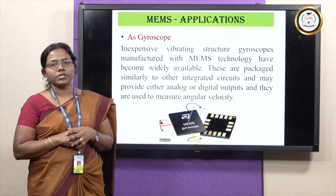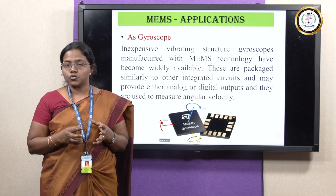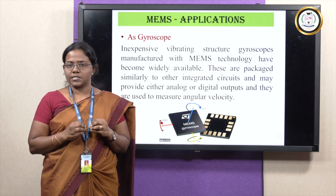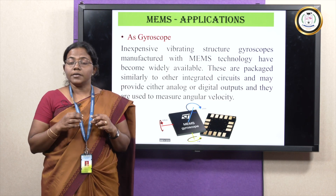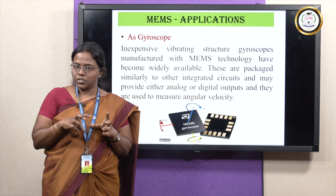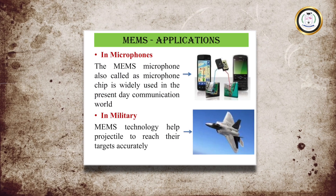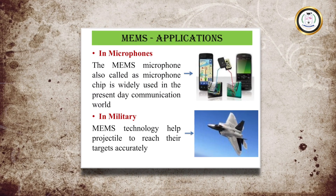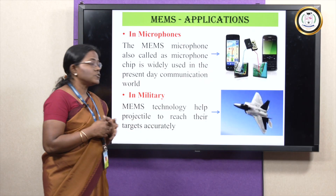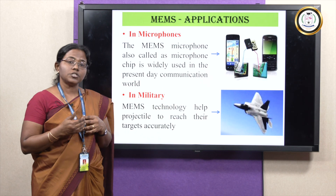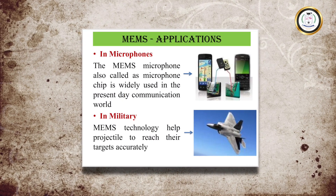Everyone knows about the gyroscope. It is used in our mobile phones, laptops, etc. It is used to zoom in and zoom out the screen and scroll up and down. It is also used to rotate the picture either in landscape or portrait form. MEMS are also used in microphones, using which we can communicate. And in the military, it is used in projectiles in order to reach targets accurately.